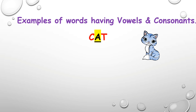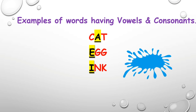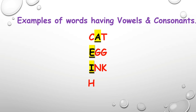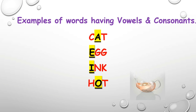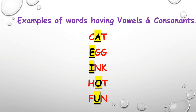First: 'cat' — it has a vowel as well as consonants. C and T are consonants and A is a vowel in that word. Next, 'egg' — E is a vowel and the other two letters are consonants. Next, 'ink' — I is a vowel and N and K are consonants. Next, 'hot' — H and T are consonants whereas O is a vowel. Next, 'fun' — F and N are consonants and U is a vowel.